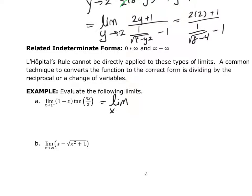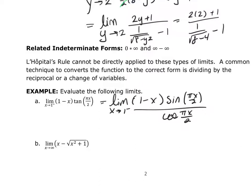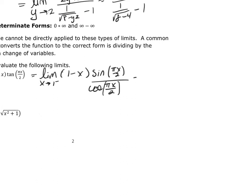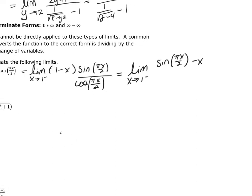I'm going to rewrite this as the limit as x approaches 1 from the left of 1 minus x, and I'm going to write tangent as sine of πx over 2 divided by cosine of πx over 2. Then I'm going to distribute the sine through on the 1 minus x. This gives the limit as x approaches 1 from the left of sine(πx/2) minus x·sine(πx/2), all divided by cosine(πx/2).